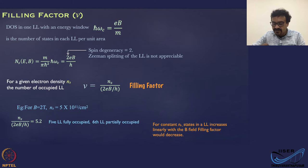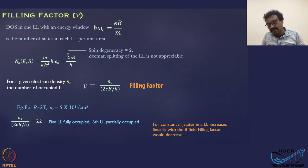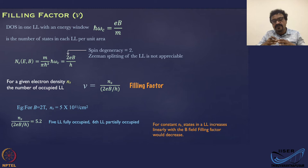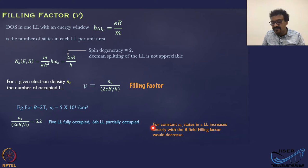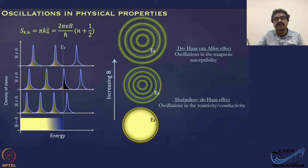The filling factor is inversely proportional to the magnetic field. When you increase the field, each Landau level expands, accommodating more states — so for a constant charge concentration n_s, the states in each Landau level increase and the filling factor decreases.